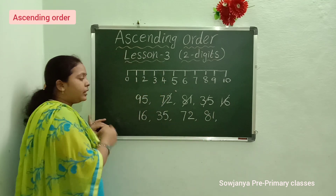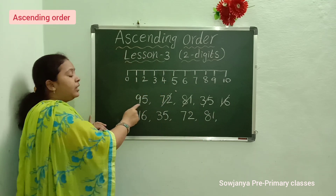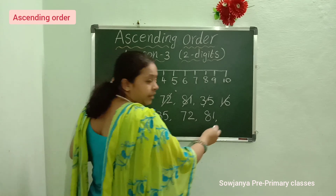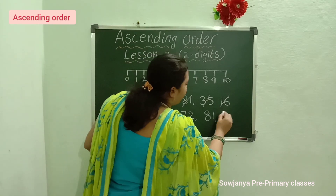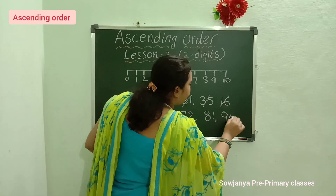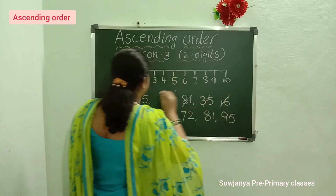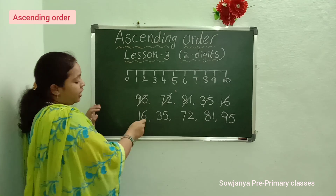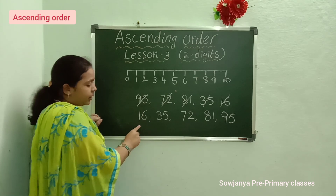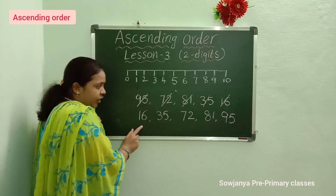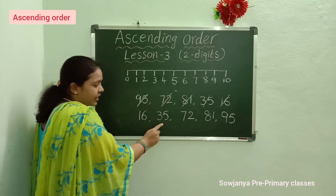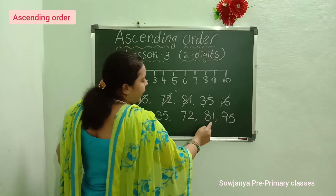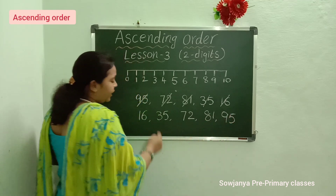And see here — what number is left? 95. Write that number here and cross it out. Now read the numbers: 16, 35, 72, 81, 95.